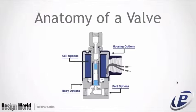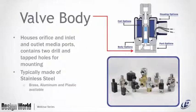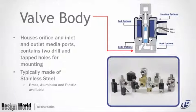This cutaway shows some components that make up a solenoid valve: body options, coils, ports, housings, plungers, coil voltages ranging from 2 to 10,000 volts, and different seal materials. The valve body houses the inlet, orifice, and inlet and outlet media ports, contains 2-hole mounting, and is typically made of stainless steel. Brass, aluminum, and plastic are also available. Other bodies include manual override, metering, stud mount, and manifold mount to better fit unique applications.